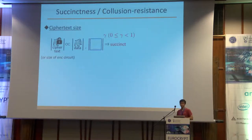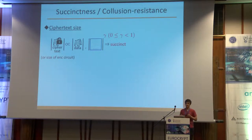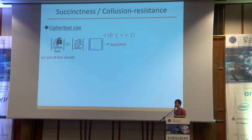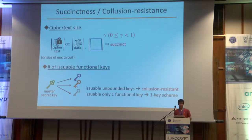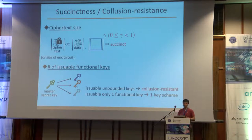I will introduce two important properties for functional encryption: succinctness and collusion resistance. Succinctness is a property related to the size of ciphertext — the size of the encryption circuit depends on the size of functions only sub-linearly. Collusion resistance is a property related to the number of securely issuable functional keys. I will also use the term single-key scheme to indicate a functional encryption scheme that can securely issue only a single functional key.